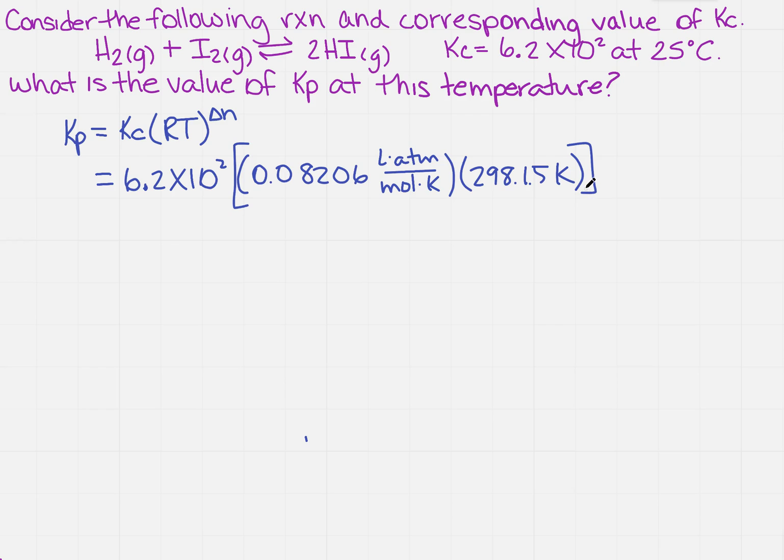And then I'm going to take this whole thing, and I'm going to raise it to the change in moles. Well, I've got 1 plus 1, which is 2, so I have 2 moles on the left and 2 moles on the right, so that means that 2 minus 2 is 0. Let's write that so you can see it good. 2 minus 2. So that means that what?